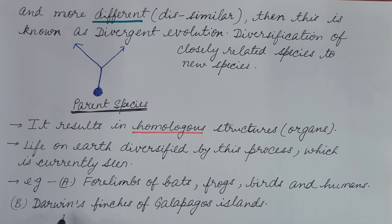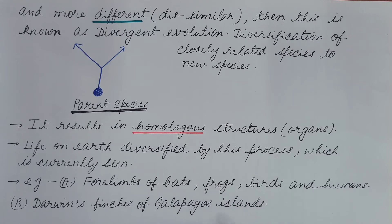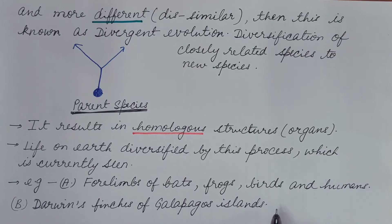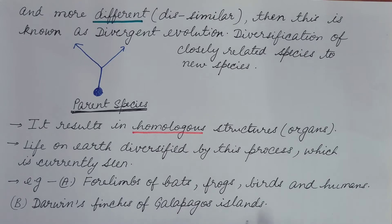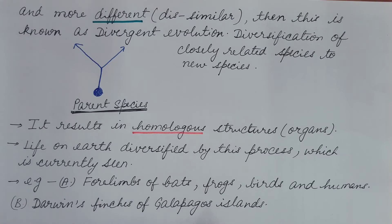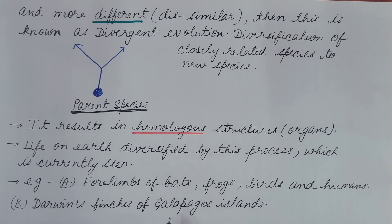One of the most famous examples is Darwin's finches of the Galápagos Islands. These finches migrated from the mainland to the Galápagos Islands, which is a group of islands. Thirteen different species of finches have been observed there. These finches occupy different habitats and evolved into different species. Depending upon the different habitat, their diet changed, and hence the change in the shape and structure of the beak reflects their diet.